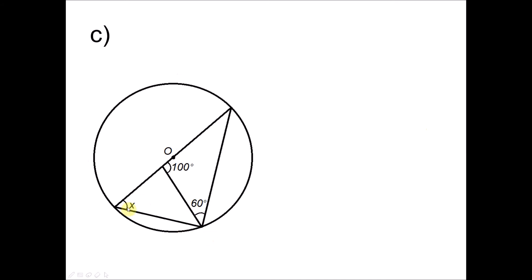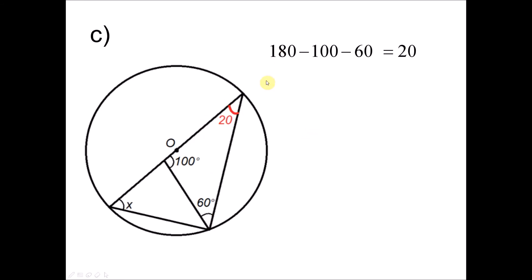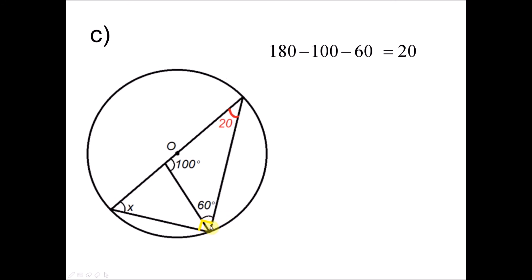Question 2C: There are two triangles, and the line shown is a diameter. From the first triangle, using the known angles, we find the missing angle: 180° minus 100° minus 60° equals 20°. Then in the larger triangle, the angle subtended by the diameter is 90°. So X equals 180° minus 20° minus 90°, giving X equals 70 degrees.